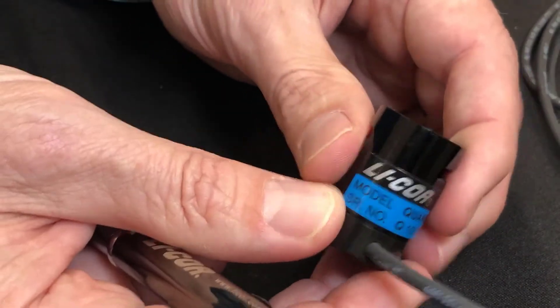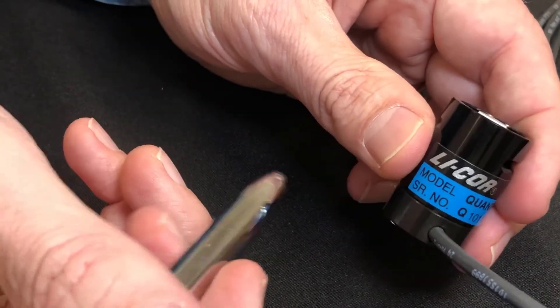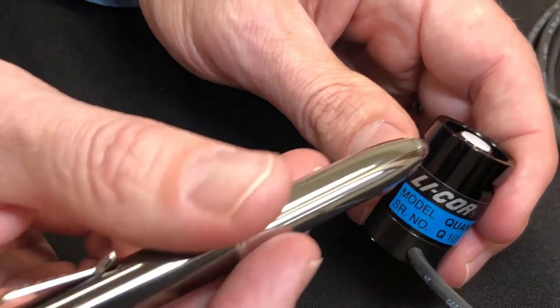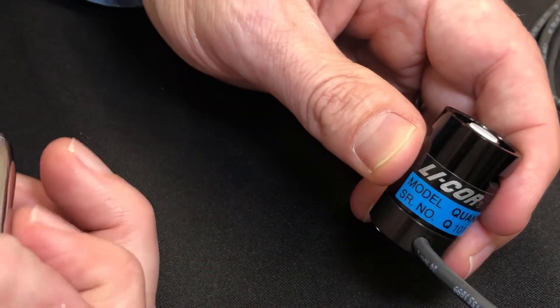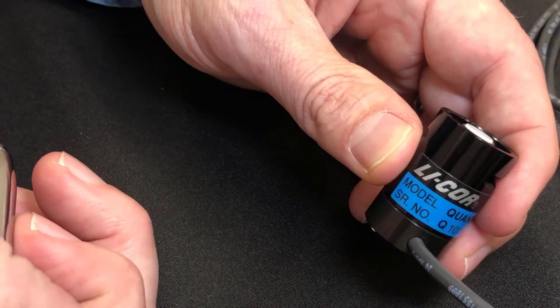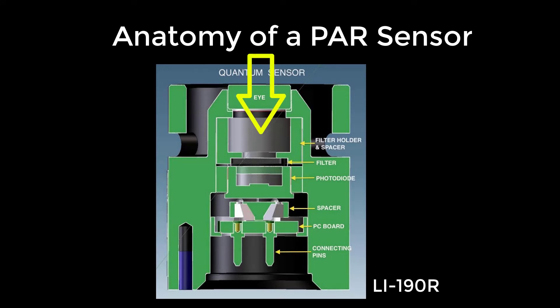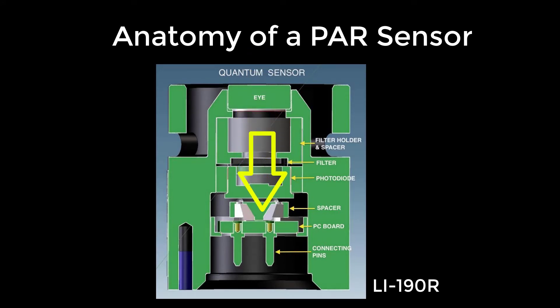The cosine correction makes sure that whenever the light is not directly overhead and is at some angle, the light is not being reflected or refracted to create an underestimation or overestimation of the light intensity. You'll also notice slots on the sensor body that allow water to drain out, in case you're using this sensor outside or in an irrigated greenhouse. Let's take a look at the anatomy of the sensor by looking at a schematic of what goes on inside the sensor body itself.